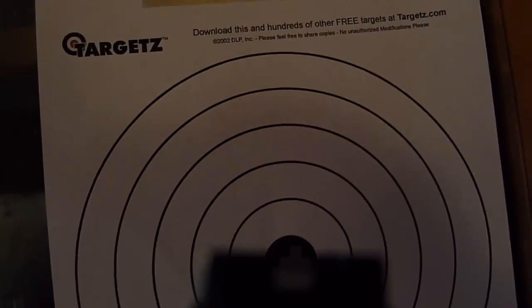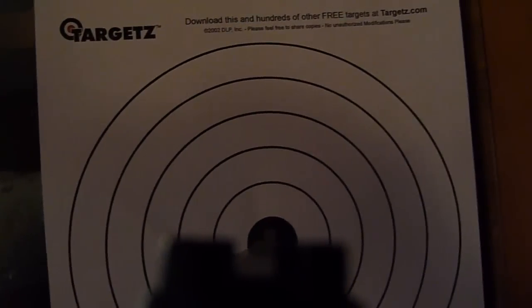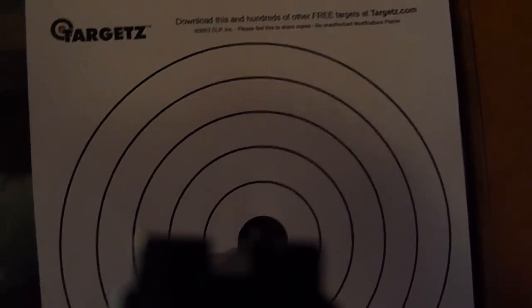And so when I try to get a sight picture on a black target, the front sight just basically blends in. And it's really difficult to get a good aim on the bullseye.